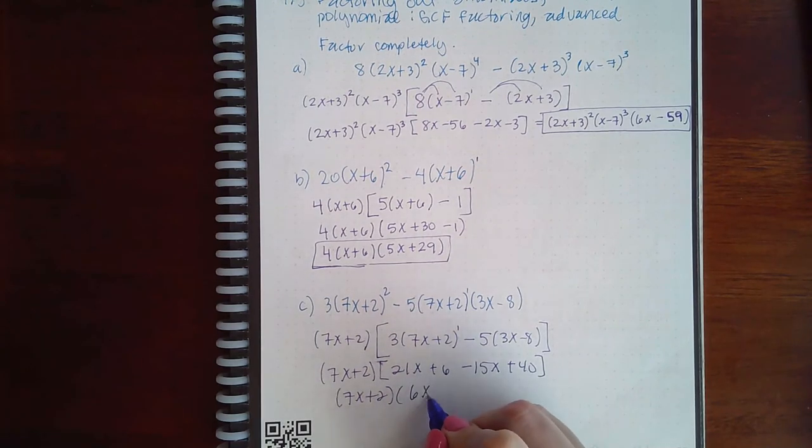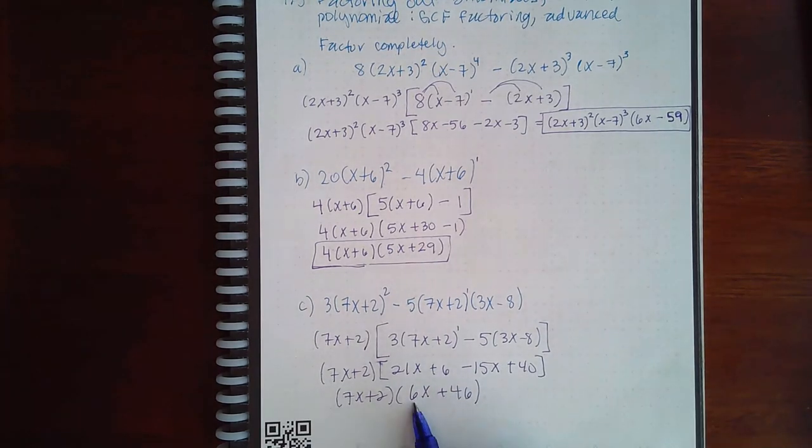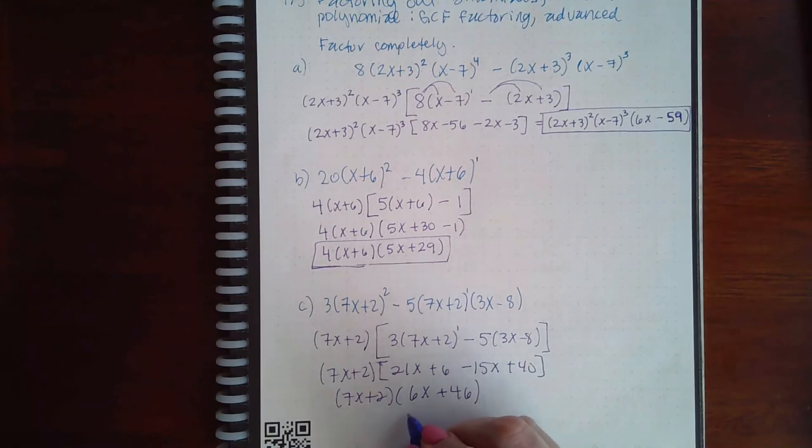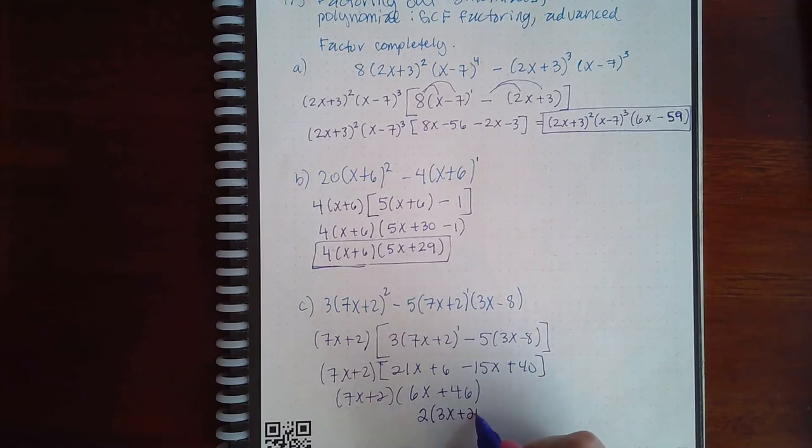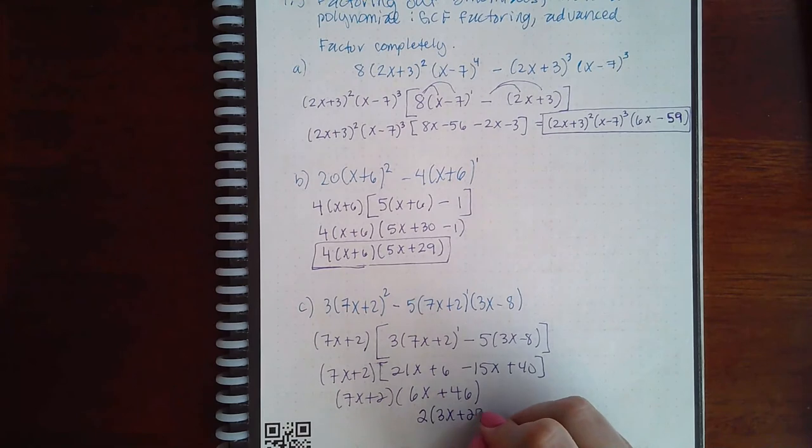If I simplify that even further, I end up with 6x plus 46. And this can be simplified because 6 and 46, you can factor out a 2, and you get 3x plus 23. Now 23 is prime, which means I cannot factor anything between 3 and 23.